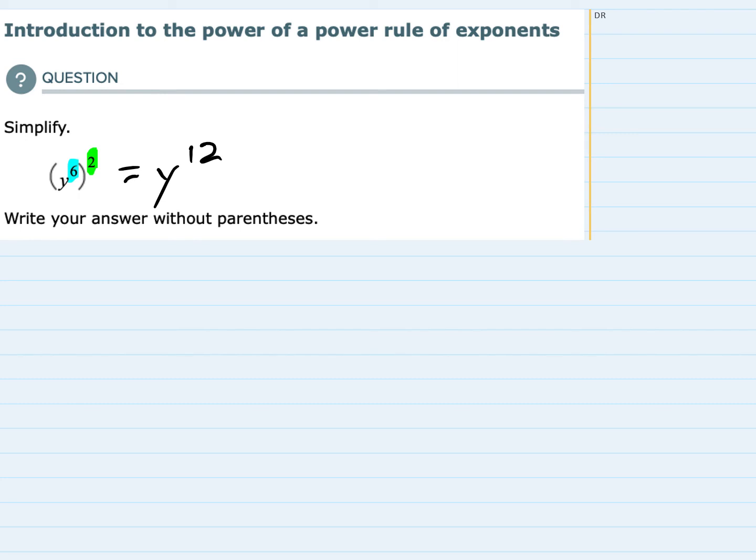But just thinking about what this expression actually has here, it has y to the 6 squared. So that means we multiply y to the 6 by itself. And we don't really need the parentheses here, this is all multiplication. How many y's do we have being multiplied? We have 12 of them.